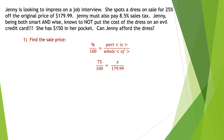You are paying 75% of the cost, because the 25% you are not going to pay. That 75% is the part we're trying to figure out, out of the whole cost of $179.99. Cross multiply: 100x equals 13,499.25. Dividing by 100, I get $134.99 — that is the sale price of the dress.